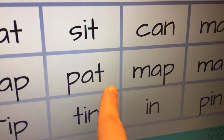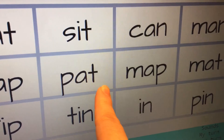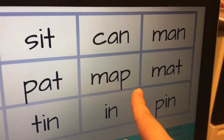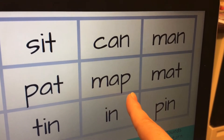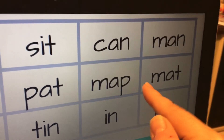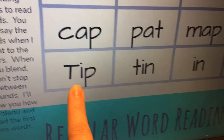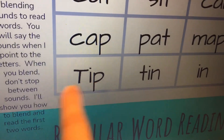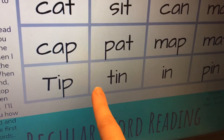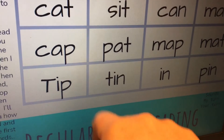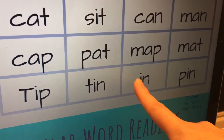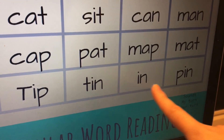That word is pat, your turn. That word is map, your turn. That word is mat, your turn. That word is tip, your turn. That word is tin, your turn. That word is pin, your turn.